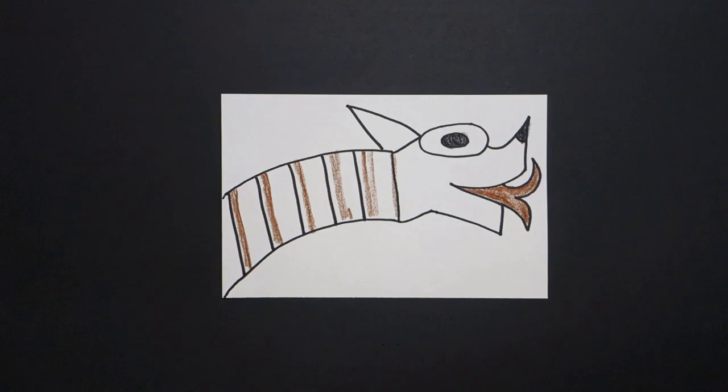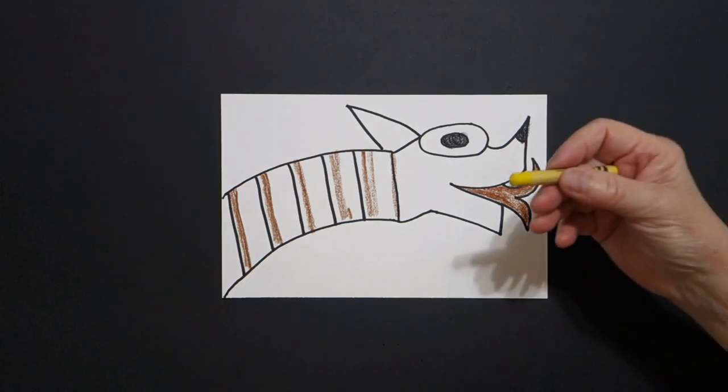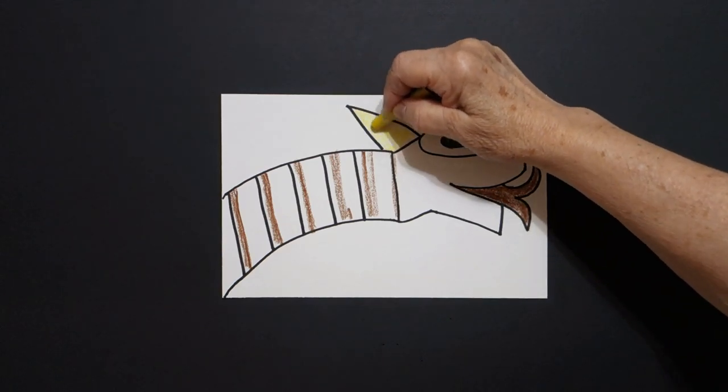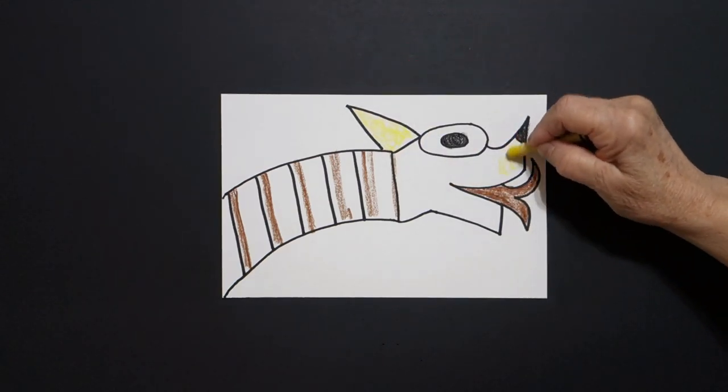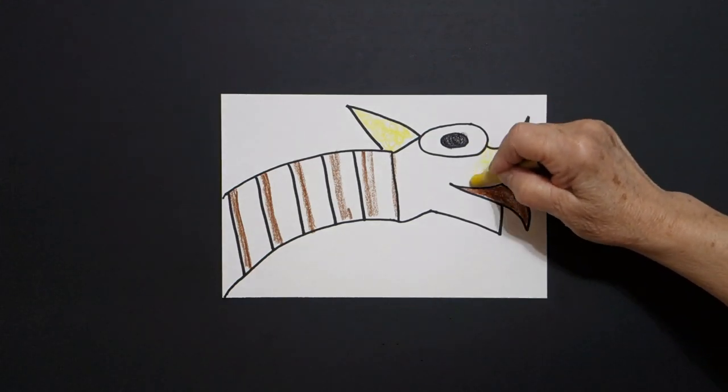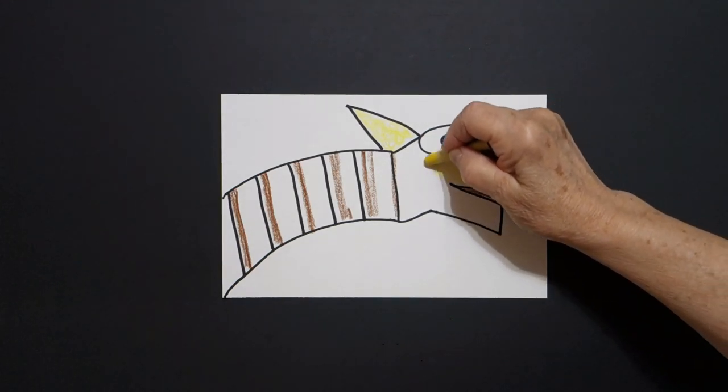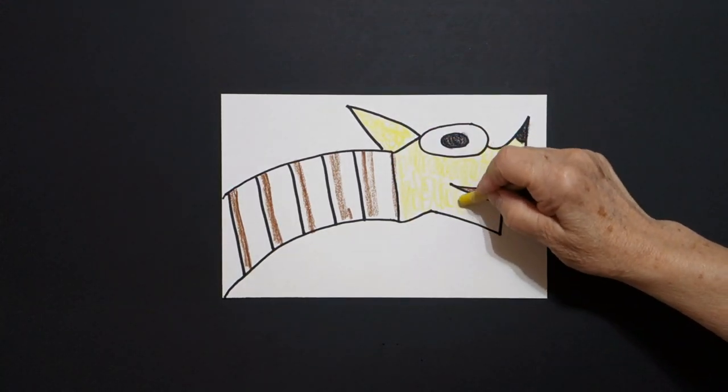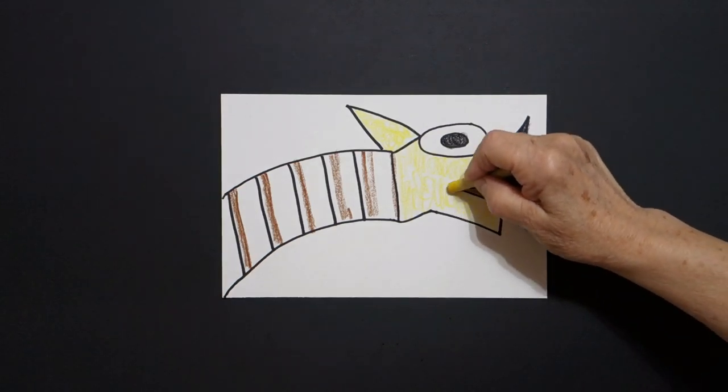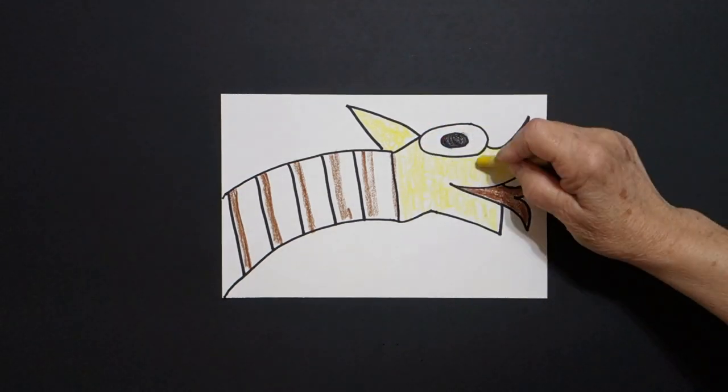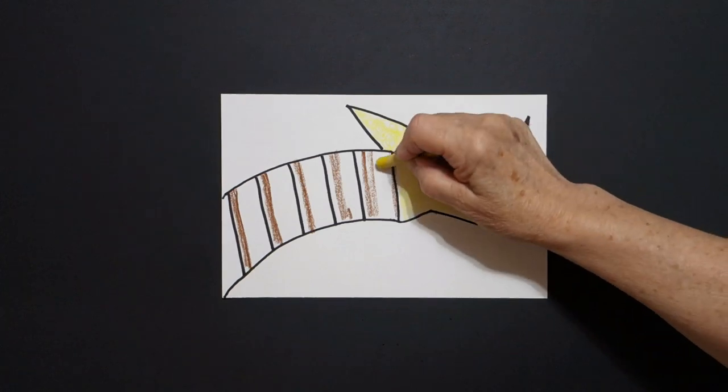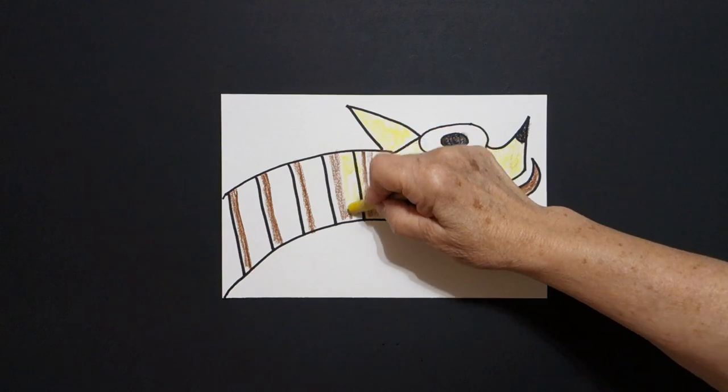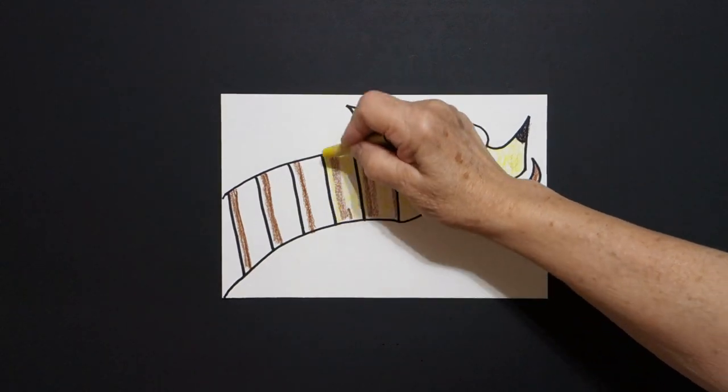Then my last color is yellow and I'm going to loop de loop yellow all inside these spaces. Now I like using the loop de loop line, which is basically controlled scribble, but you keep it all in the space, so it adds texture, it adds color, and it doesn't hurt your arm or your hand while you're coloring.